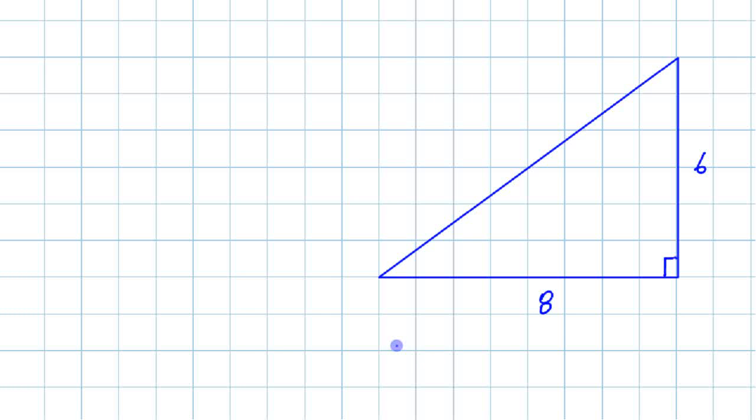again, something you learned in earlier years is that missing side. If you know two of the sides, that is 10. So let's say we have a triangle like that.